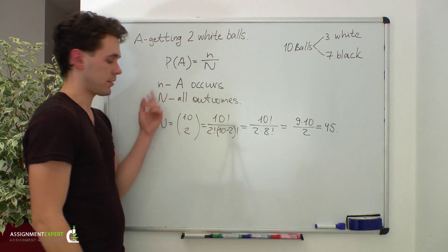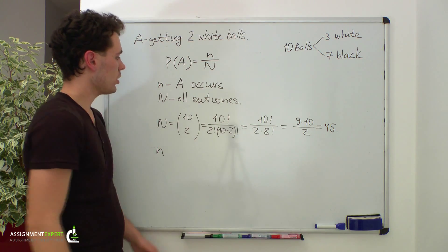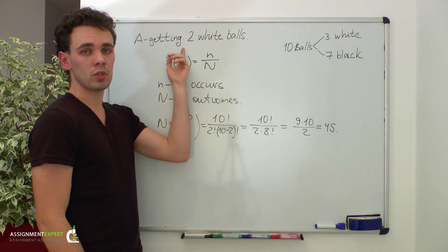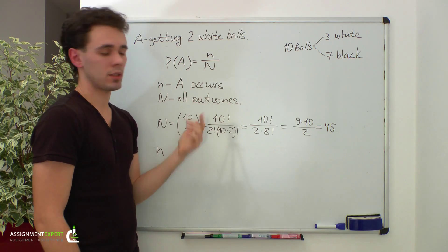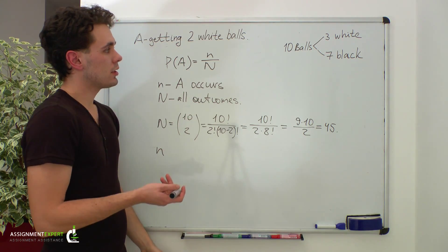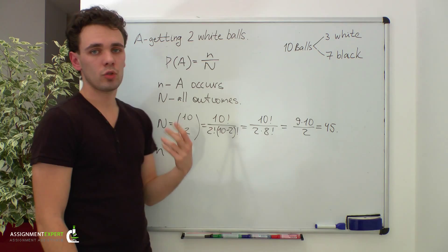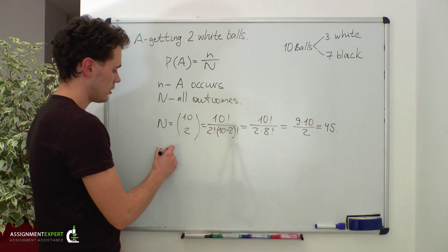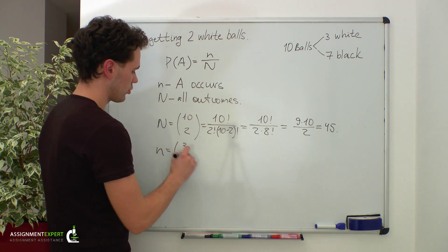Now small n. Small n is the number of outcomes when event A occurs, when we get two white balls out of the urn in our case. This is the number of ways in which we can pick two balls out of three white balls in the urn. Using the binomial coefficient, this equals three choose two.